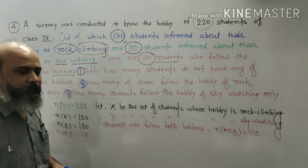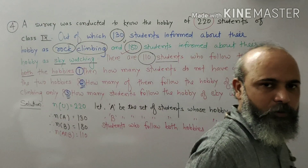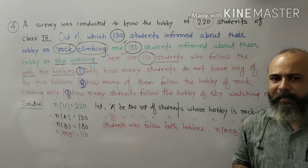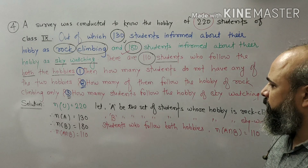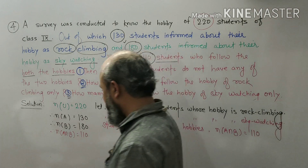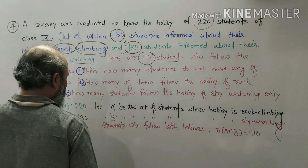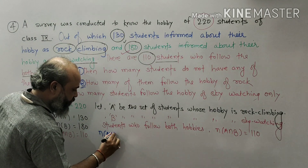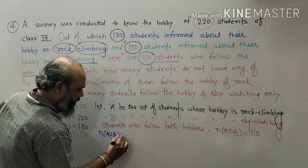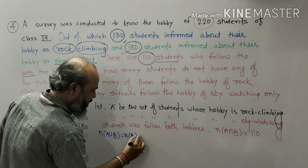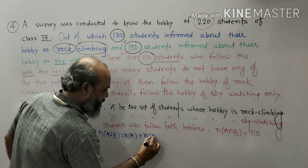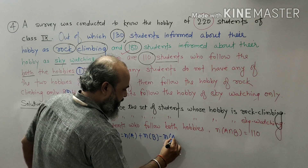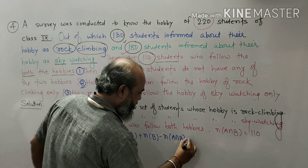So we are having number of A, we are having number of B, and we are having number of A intersection B. By using these values, we will find number of A union B. The formula is: number of A union B equals number of A plus number of B minus number of A intersection B.